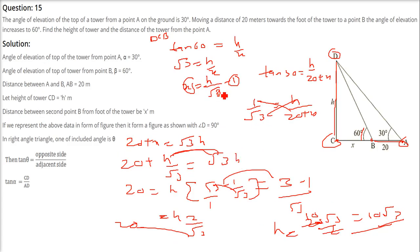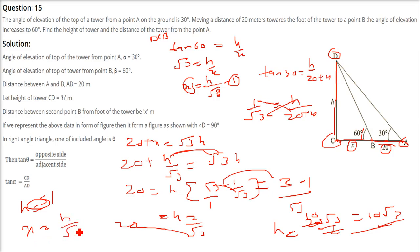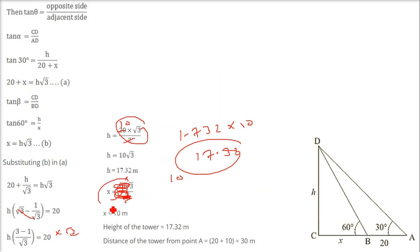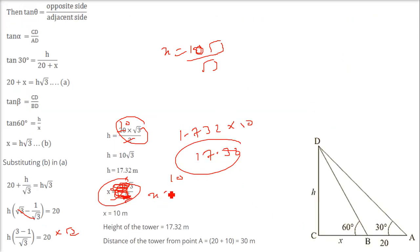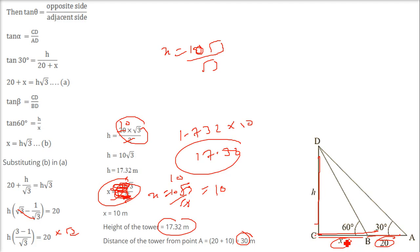The height of the tower is 17.32 meters. We also need to find the distance from point A to the tower. X equals H divided by root 3 equals 10 root 3 divided by root 3 equals 10 meters. The total distance from A is X plus 20 equals 10 plus 20 equals 30 meters. So the height is 17.32 meters and the distance from point A is 30 meters.